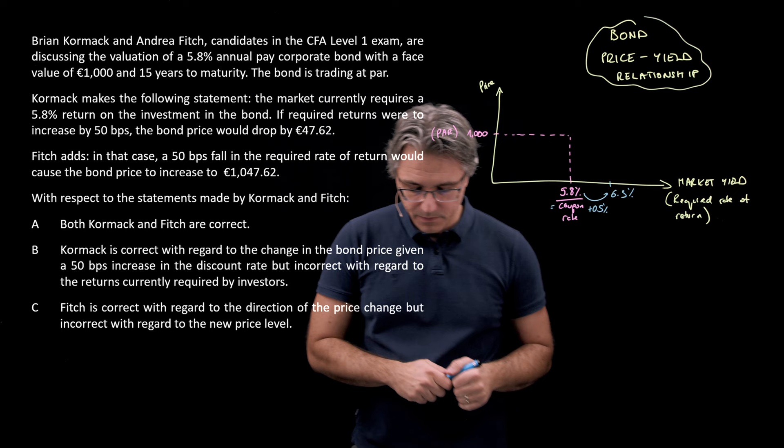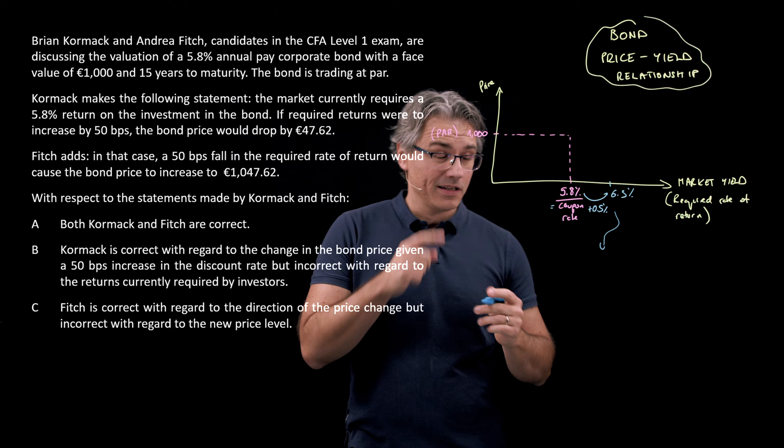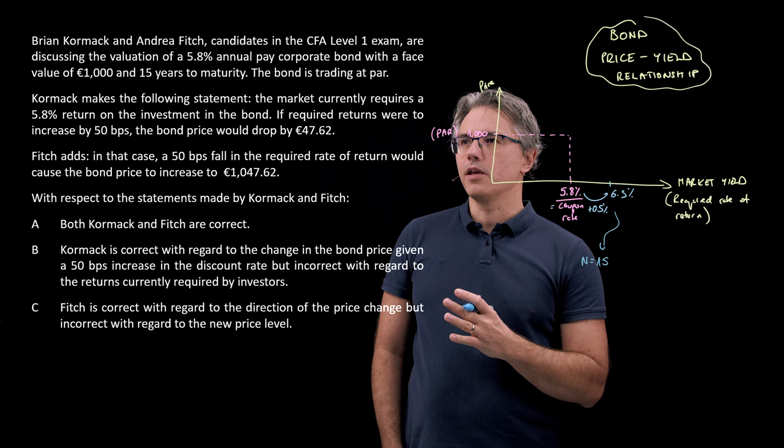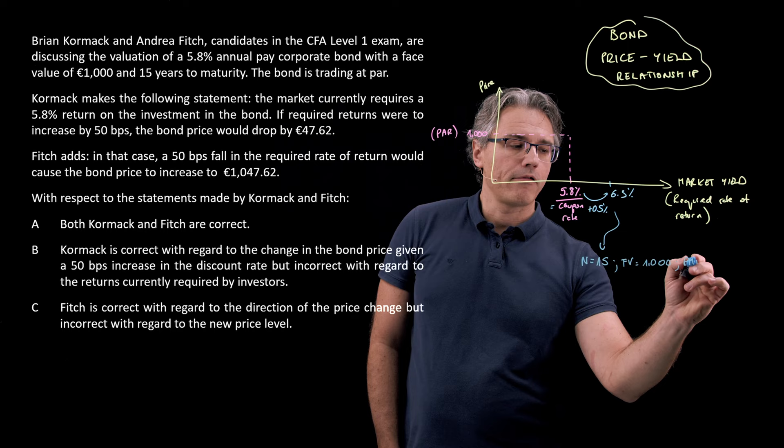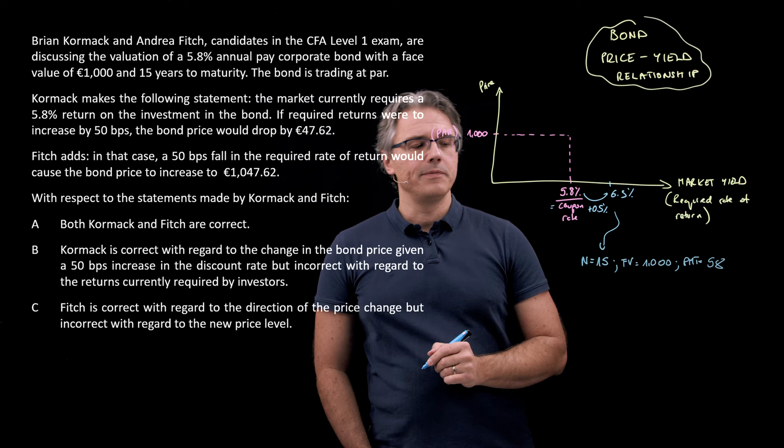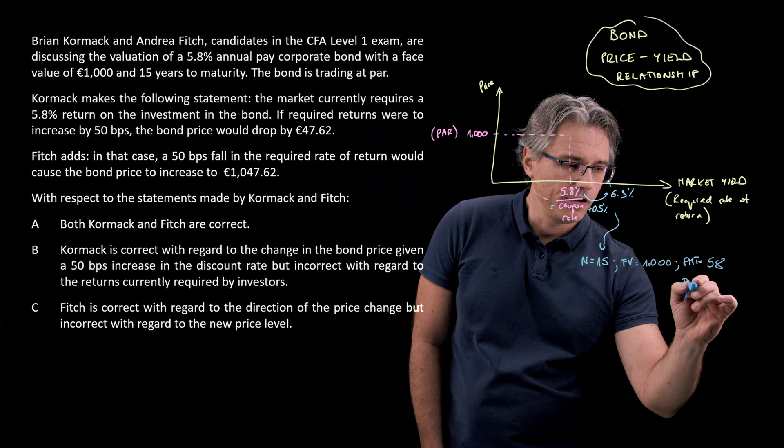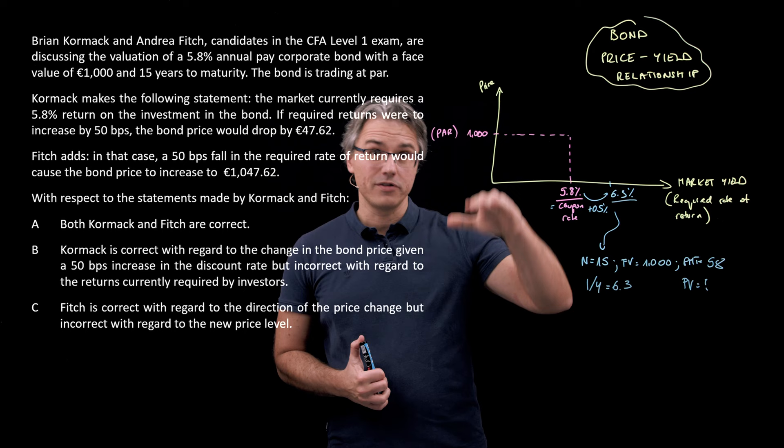So, if we wanted to compute the new price level over here, we would need to, in our calculators, basically input the following data. We would have an n parameter equal to 15. That's the number of periods. What else? We would need a future value, a par value of 1,000. We would need to have the coupon, the PMT parameter set up at whatever is the coupon level. That's 5.8% of 1,000. That's going to be 58, isn't it? And what else do we need as well? Well, we'll be looking for the PV. That's the unknown. But we'll tell the calculator that the yield currently required by investors is 6.3. So, 6.3. And it should tell us a PV, which is obviously going to be lower than 1,000. Let's do this on the calculator.